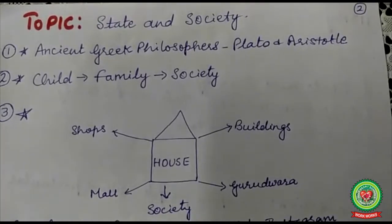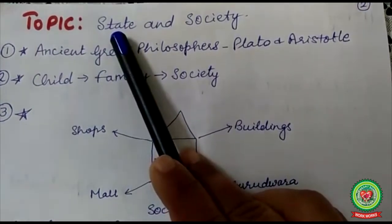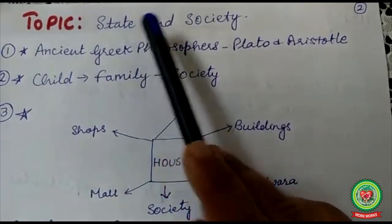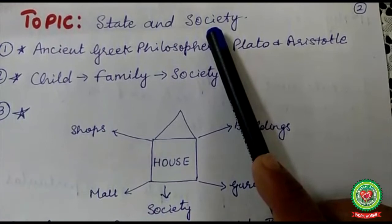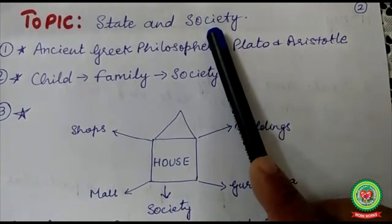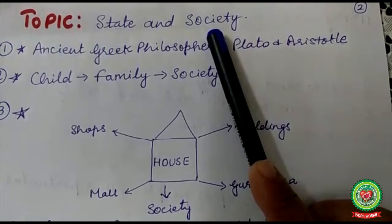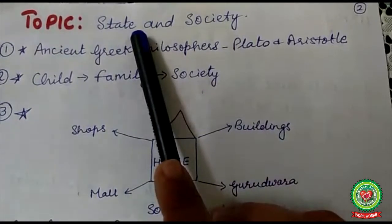Students, you remember last time I talked about the state and discussed the four elements: population, territory, government, and sovereignty. Today I will talk about society. This word is not new for you; we have been using it in our routine. I also guided you last time that you must quote political thinkers to make your answers more valuable in political science. Two political thinkers are very famous: Plato and Aristotle.